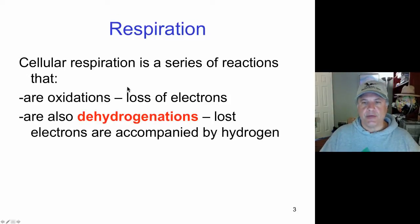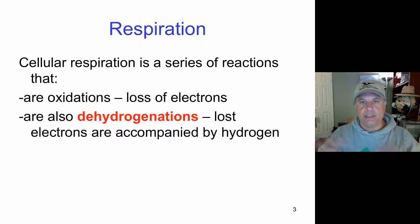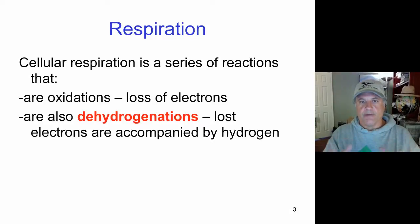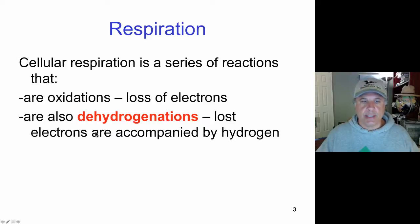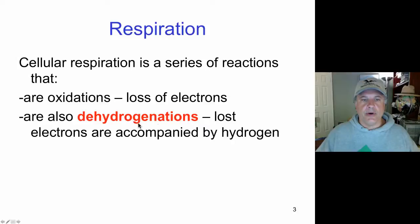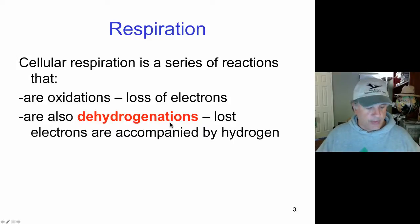Respiration is a series of reactions that involve oxidations. We oxidize glucose — we burn glucose. Oxidation is like burning; it's the same thing. When we light a piece of paper and it burns, that's oxidation. If you denied the surrounding environment oxygen, the paper would not burn. You need oxygen to burn paper and you need oxygen to respire. Also, we must consider the loss of electrons that occur, called dehydrogenations. When electrons leave compounds accompanied by hydrogen, hydrogen can carry one electron with it. So in addition to oxidations and reductions, there are dehydrogenations that occur in respiration.